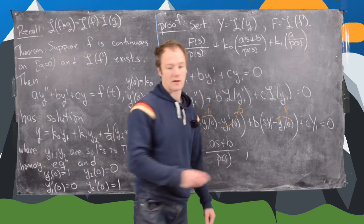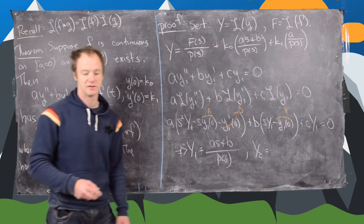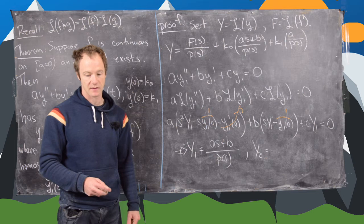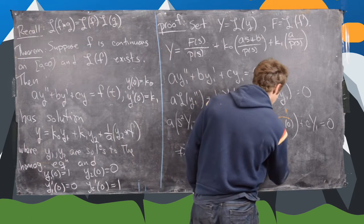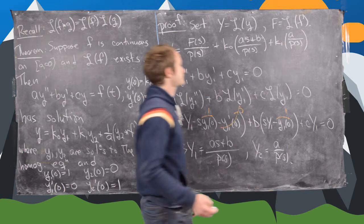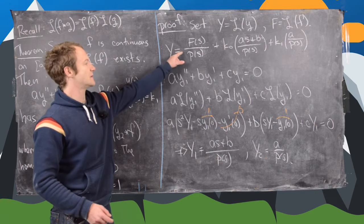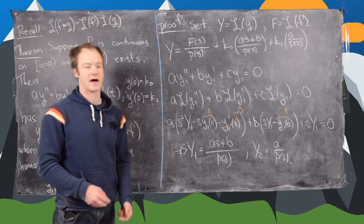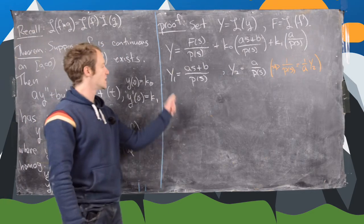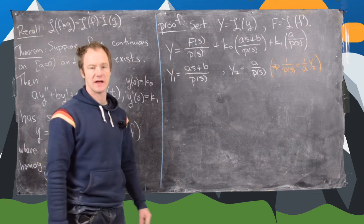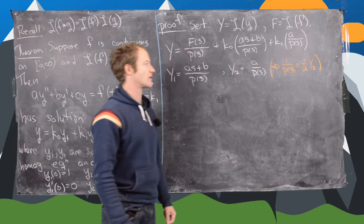Similarly, for Y2 — the Laplace transform of the homogeneous solution y2 — using its initial conditions y2(0) = 0, y2'(0) = 1, we find that capital Y2 = A/P(s). This means 1/P(s) = (1/A)·Y2, a key substitution we'll use next.